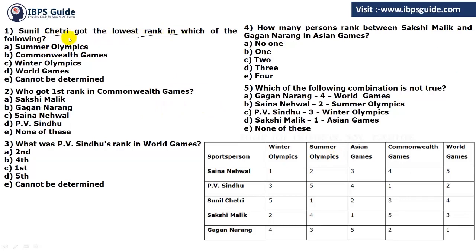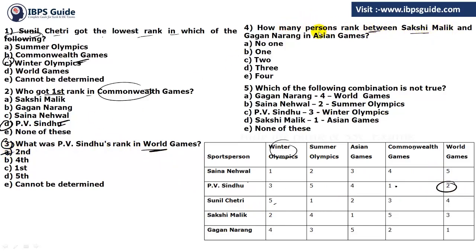Now let's answer the questions. Question 1: Sunil Chhatri got the lowest rank in which event? Sunil Chhatri got rank 5 in Winter Olympics, so the answer is Winter Olympics. Question 2: Who got first rank in Commonwealth? The answer is PV Sindhu — that is option D. Question 3: What was PV Sindhu's rank in World Games? PV Sindhu got rank 2 in World Games — that is option A. Question 4: How many persons' ranks are between Sakshi Malik and Gagan Narang in Asian Games? Sakshi Malik is rank 1 and Gagan Narang is rank 5 in Asian Games, so there are 3 persons between them — that is option D.